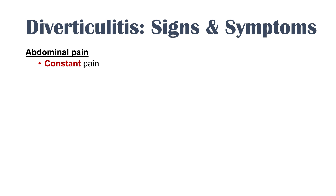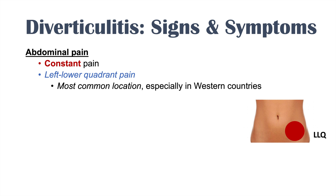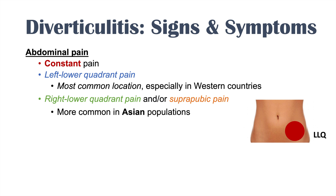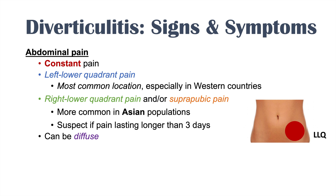One of the cardinal symptoms of diverticulitis is abdominal pain — a constant pain that generally occurs in the left lower quadrant. This is the most common location in Western countries with Western diets. Right lower quadrant pain or suprapubic pain can occur in Asian populations, where you want to suspect diverticulitis when the pain lasts longer than three days. The pain can also be diffuse throughout the entire abdomen.